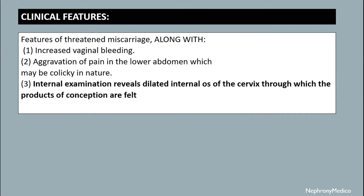Clinical features. The features of the threatened miscarriage along with increased vaginal bleeding, aggravation of the pain in the lower abdomen which may be colic in nature, and the internal examination reveals the dilated internal os of the cervix through which the products of conception are felt.